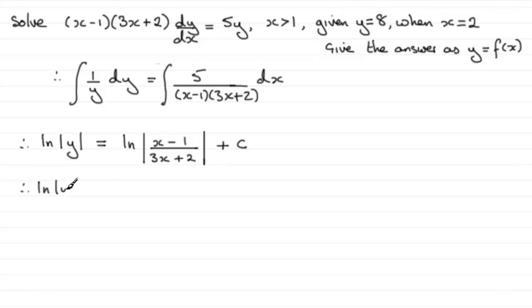So what we end up with is ln|y| = ln|(x-1)/(3x+2)| + ln(A), where A is a constant. Now that I've got this, I can just group these two together.